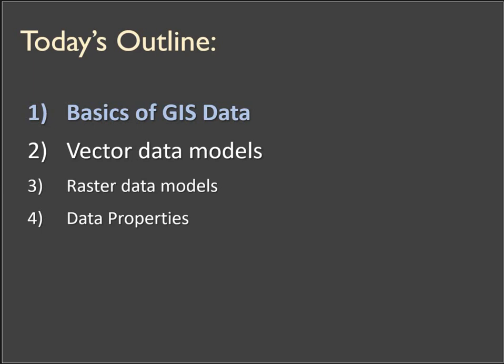Let's talk about spatial data. It's really easy to take this for granted because it's everywhere around us. It's on our phones, we're collecting it ourselves without even knowing it. Every time we do a Google search on our maps, we're finding spatial data. So we're going to talk about what spatial data is, get you thinking about it, think about how it relates to the real world, and then introduce one of two primary formats for storing spatial data.